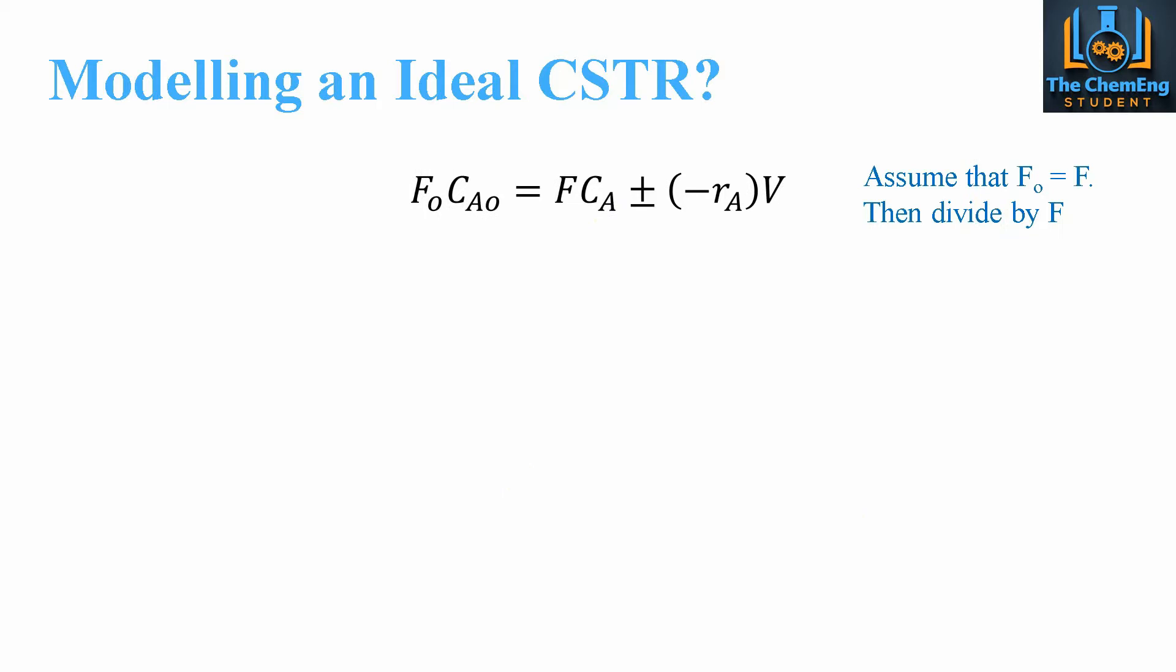Now the other set of assumptions that we made was that we have steady state conditions and we also have perfect mixing. So what we can then say is that F₀ must be equal to F, because if we have steady flow, then the flow rate that enters must be the same as the flow rate that leaves. So therefore, we could make F₀ equal F.